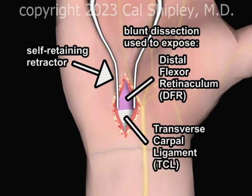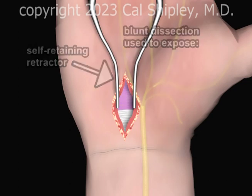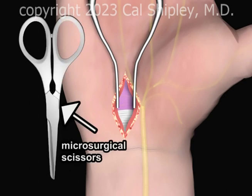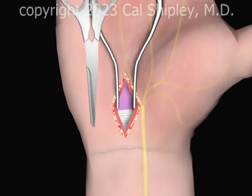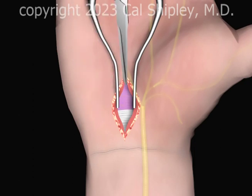Blunt dissection and a self-retaining retractor are used to expose the distal flexor retinaculum and the transverse carpal ligament. Microsurgical scissors are used to open the distal flexor retinaculum and transverse carpal ligament.